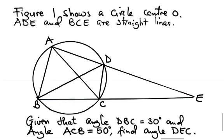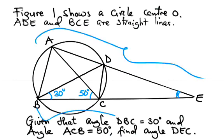So angle ACB is 50 degrees and angle DBC is 30 degrees. We need to find the value of this angle here, DEC.